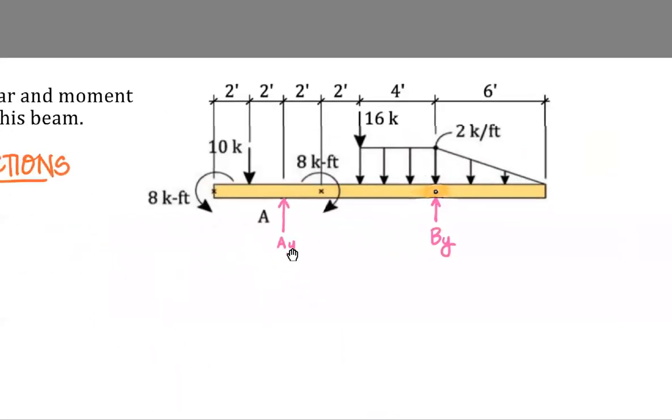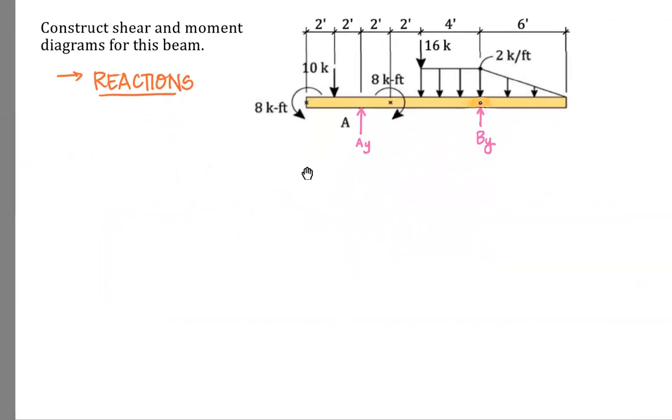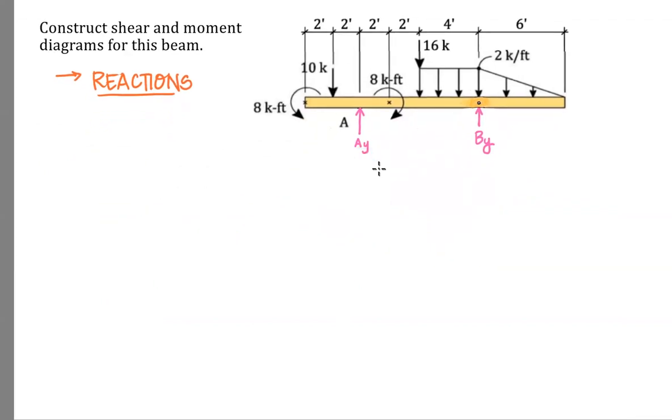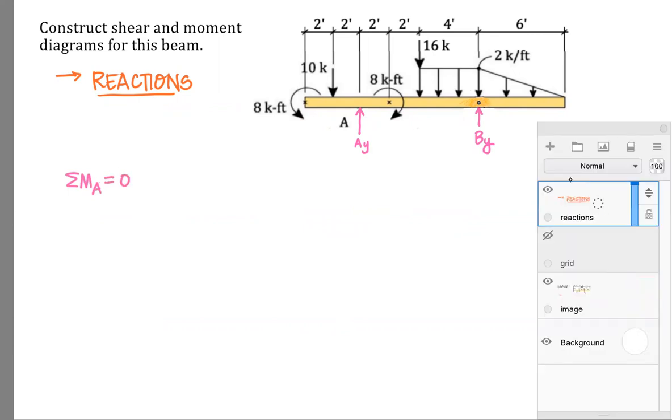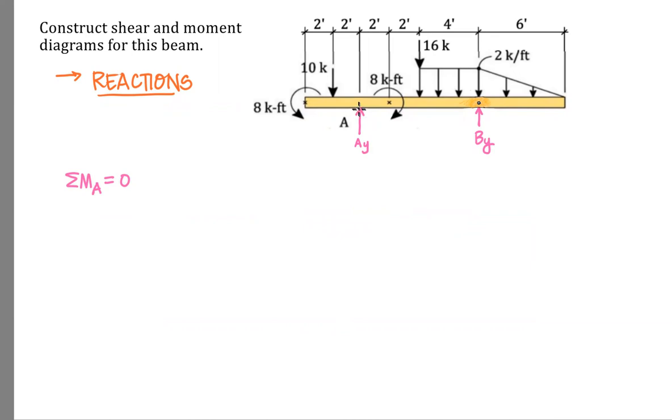We freed our body from the supports. We have our reaction forces shown symbolically. And let's do our equations of equilibrium. You'll get to the answer fastest by doing your moment equation first. So I'm going to do a moment summation about A set that equal to zero. How many terms are we going to have? One, two, three, four, five, six, and seven. We're going to need to break this up into seven pieces.